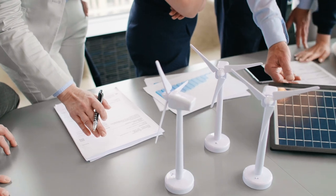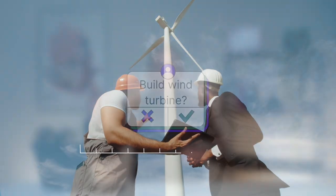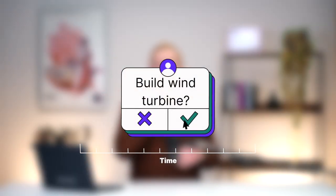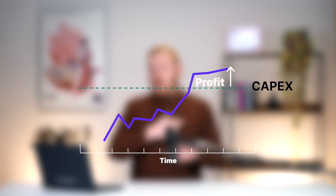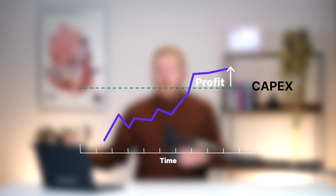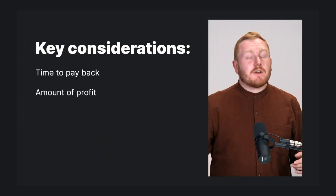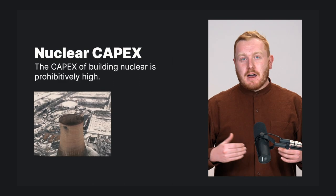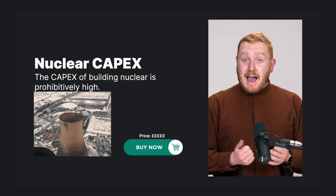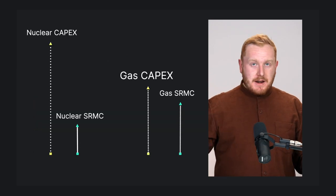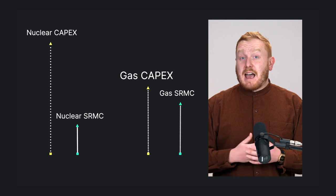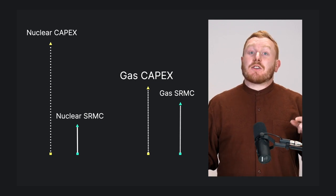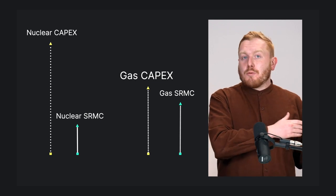When planning and building a generator of any type, the time it will take to pay back that capex and the amount of profit that can be made on top of that need to be taken into account. For example, one argument you'll often hear against nuclear is that the capex of building nuclear is prohibitively high. However, while the cost of building a nuclear plant might be more initially than the cost of building a gas turbine power station, the gas turbine power station actually costs more money to run.